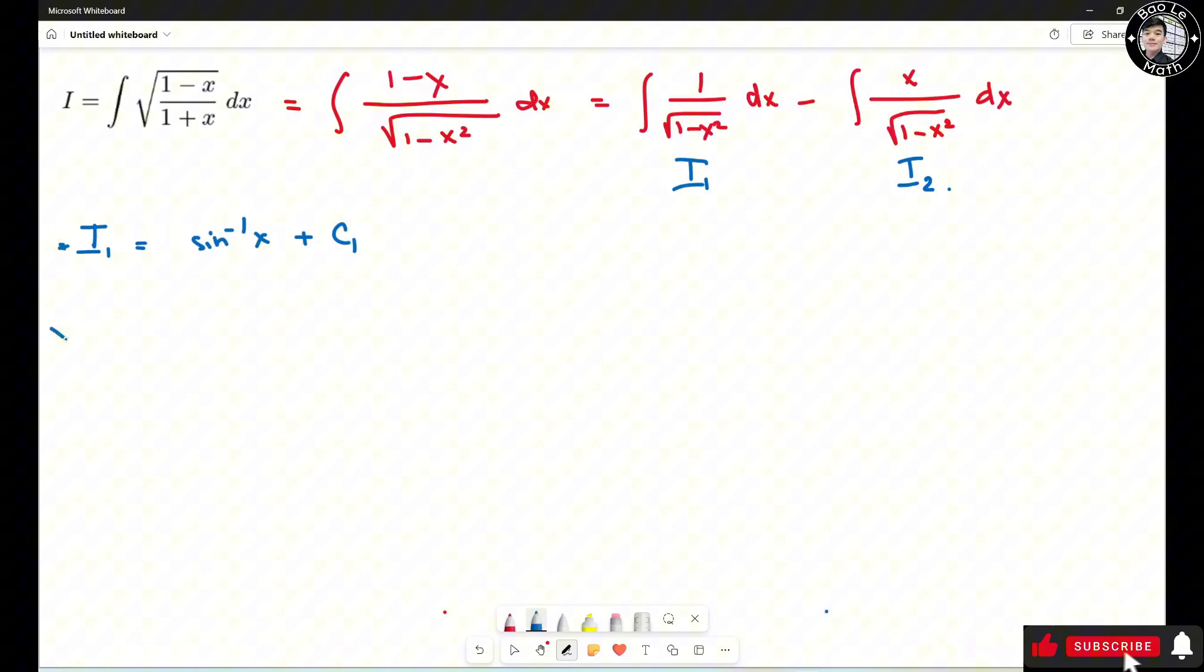Now to calculate I2, I need to use u substitution. So I'm going to let u be 1 minus x square. Then I'm going to square both sides, so it turns out to be 1 minus x square.